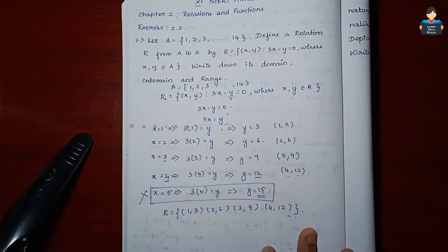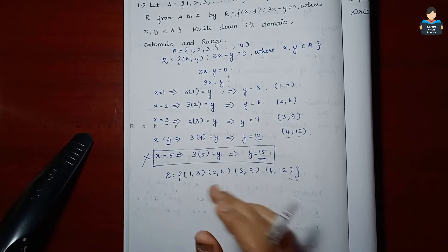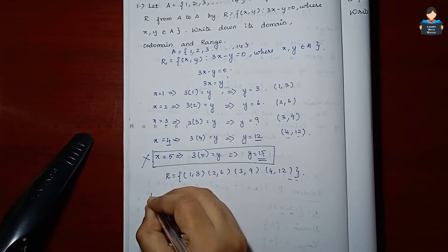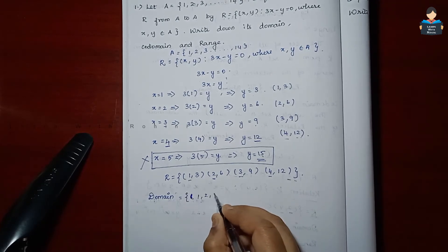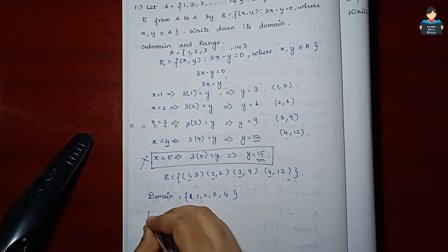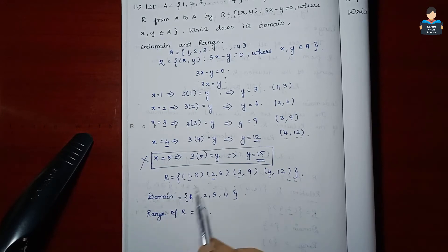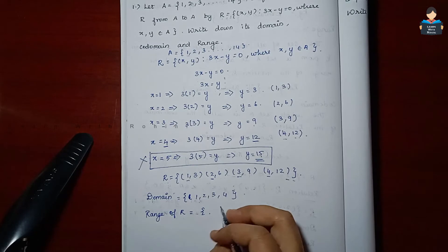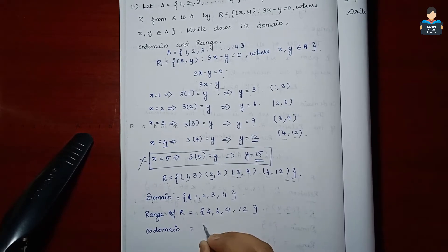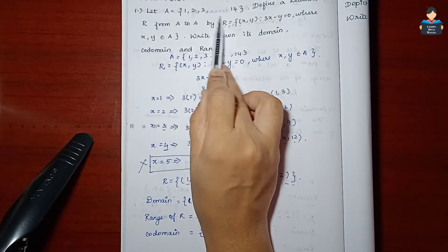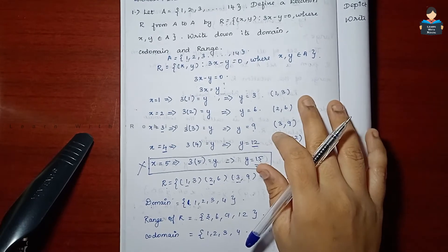So the ordered pairs in the relation are (1,3), (2,6), (3,9), and (4,12). The domain — the first elements — is {1, 2, 3, 4}. The range — the second elements — is {3, 6, 9, 12}. The codomain is all elements of set A, that is {1, 2, 3, 4, ..., 14}. Now second sum.